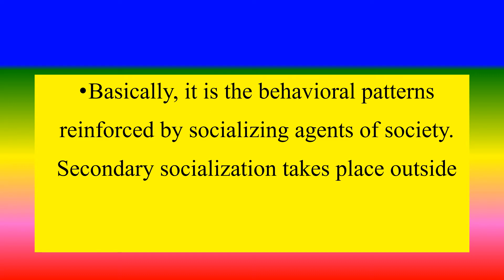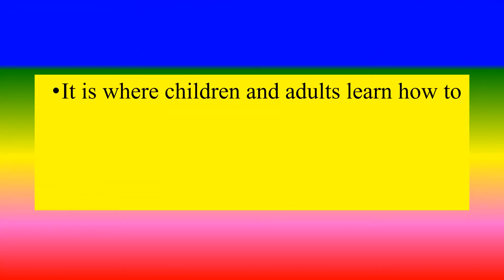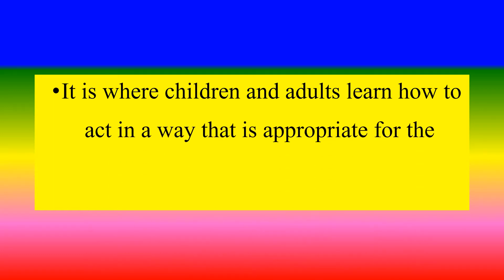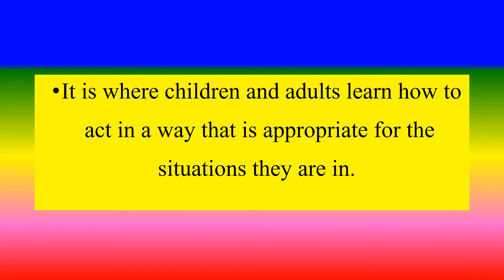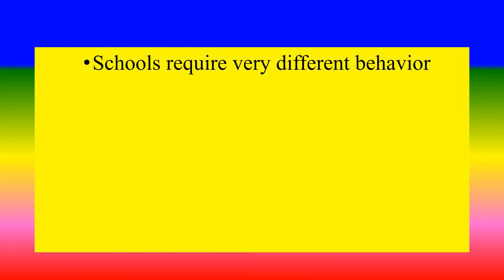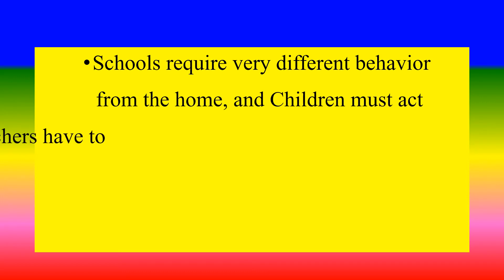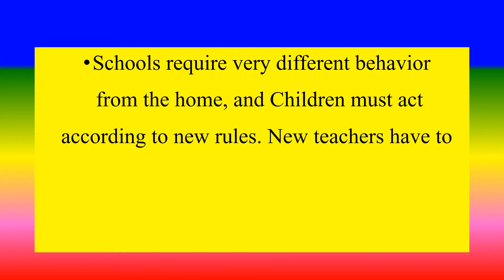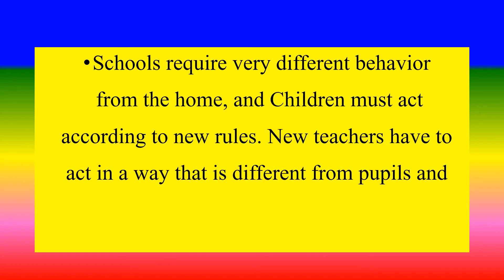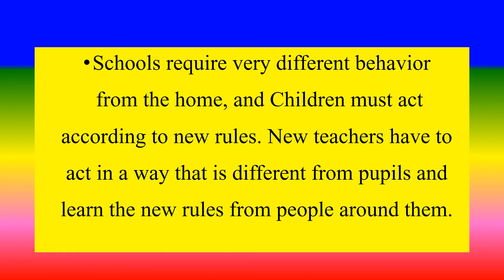Secondary socialization takes place outside the home. It is where children and adults learn how to act in a way that is appropriate for the situation they are in. Schools require very different behavior from the home, and children must act according to new rules and learn them from people around them.